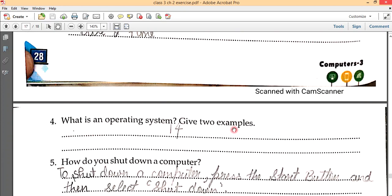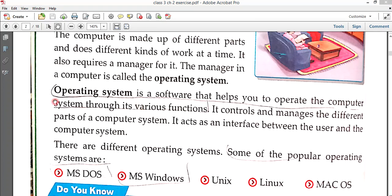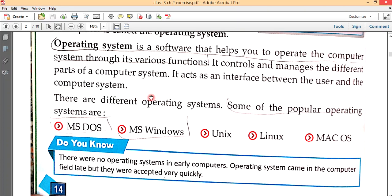What is an operating system? Give two examples. Page number 14. Operating system is a software that helps you to operate the computer system through its various functions. Some of the popular operating systems are MS-DOS and MS-Windows.